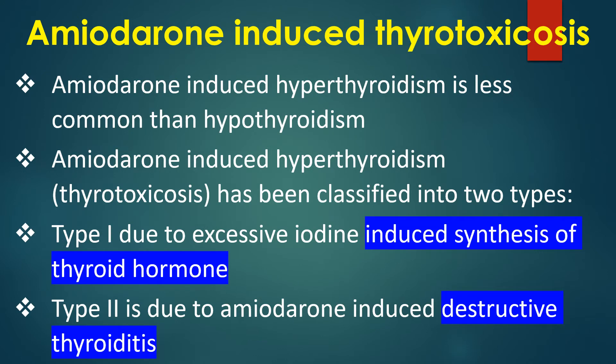Amiodarone-induced hyperthyroidism is less common than hypothyroidism. It has been classified into two types: Type 1, due to excessive iodine-induced synthesis of thyroid hormone, and Type 2, due to amiodarone-induced destructive thyroiditis.